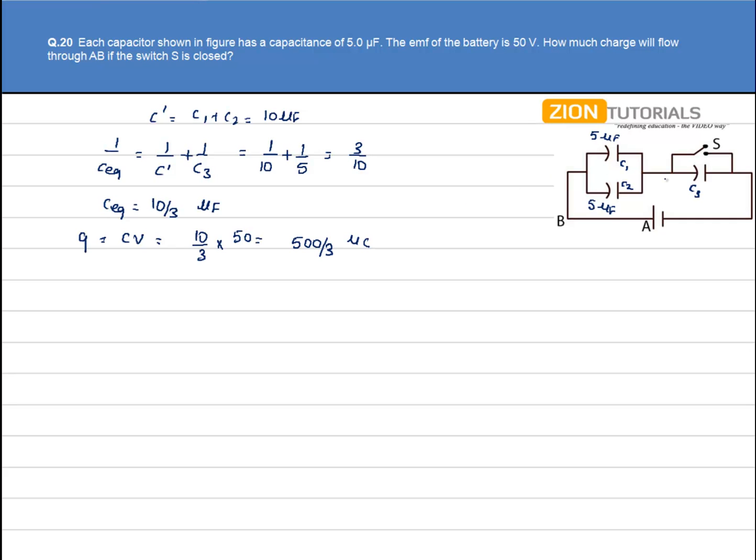So 500 by 3 coulomb is the charge on capacitor C3 and the resultant of C1 and C2. And this 500 by 3 microcoulomb charge will be divided on C1 and C2 equally. So C1 charge on C1 will be equal to 500 by 3 divided by 2 that is 250 by 3 microcoulomb.